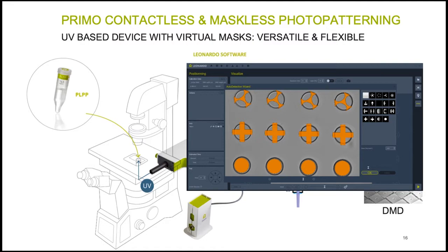The software allows use of any image. You can preview your pattern and align it with the substrate. Using PRIMO and Leonardo, you can pattern any kind of image in a few minutes without any photomask or microfabricated stamps. Pattern shapes can be changed and improved every day to follow ongoing experiments. Leonardo can also pattern large images bigger than the DMD size by subdividing the image and using the motorized stage to expose sections sequentially, reconstituting the whole image on the substrate.